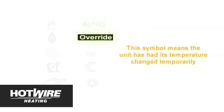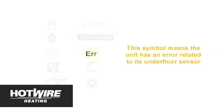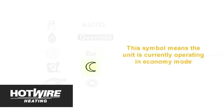The override symbol means the unit is temporarily operating at the temperature you have selected, and it will automatically go back to its scheduled temperature when the next programmed switch on or switch off time occurs. The ERR symbol means the floor sensor has an error and is faulty or not connected properly.